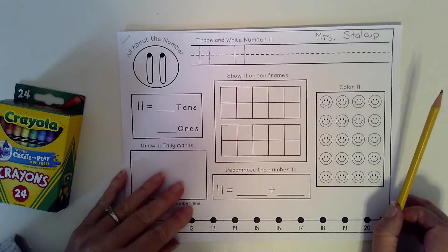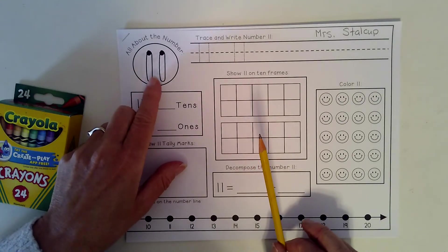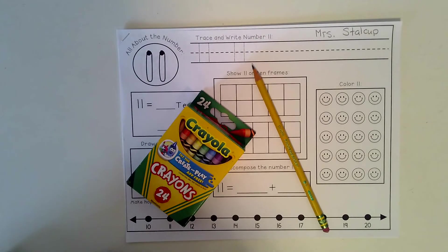We are learning about teen numbers. Get your teen number packet. It should have the 11 on it. A pencil and some crayons and come on back.